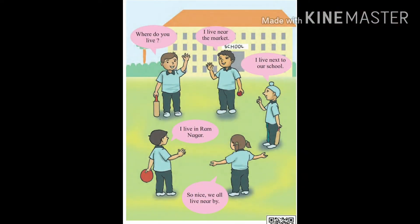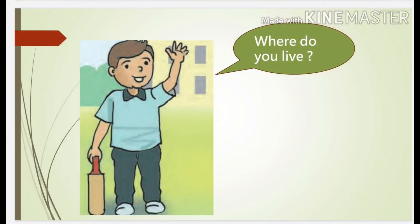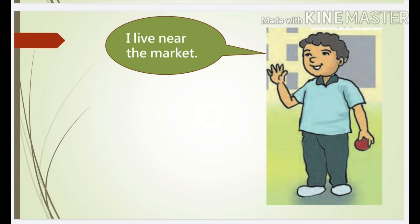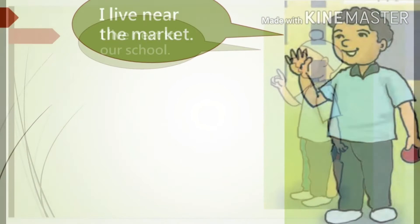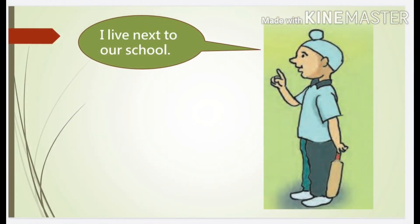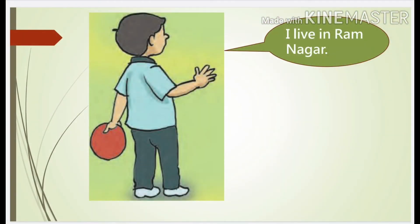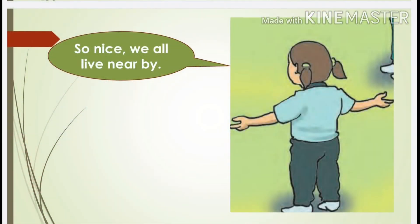Now listen to the next conversation. Everyone is telling where they live. Now Satish asks everyone: where do you live? I live near the market. My market can pass right to you. I live next to our school. My home is school. I live in Ramnagar. So nice — we all live nearby.